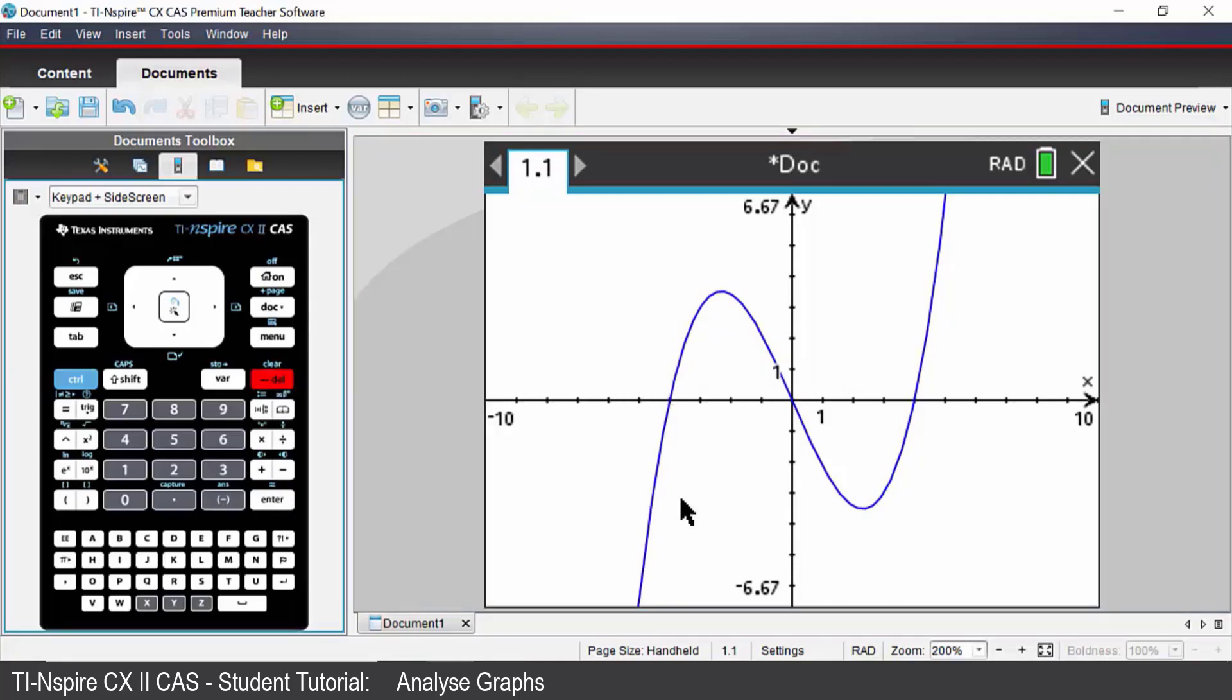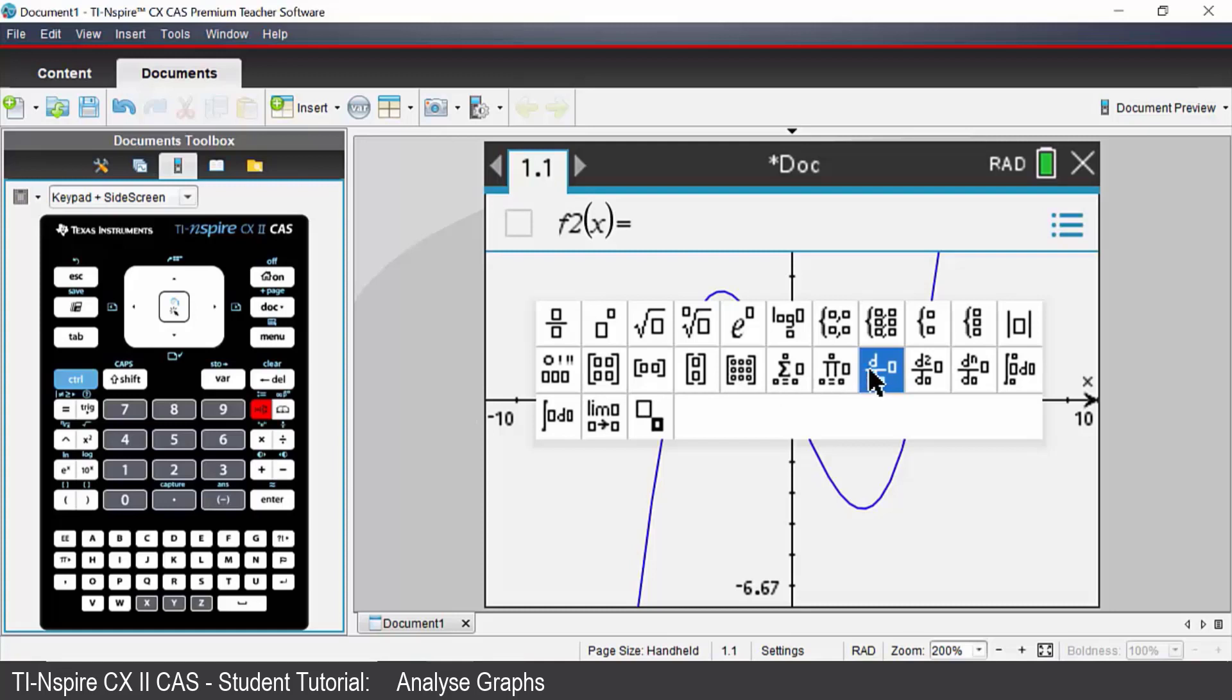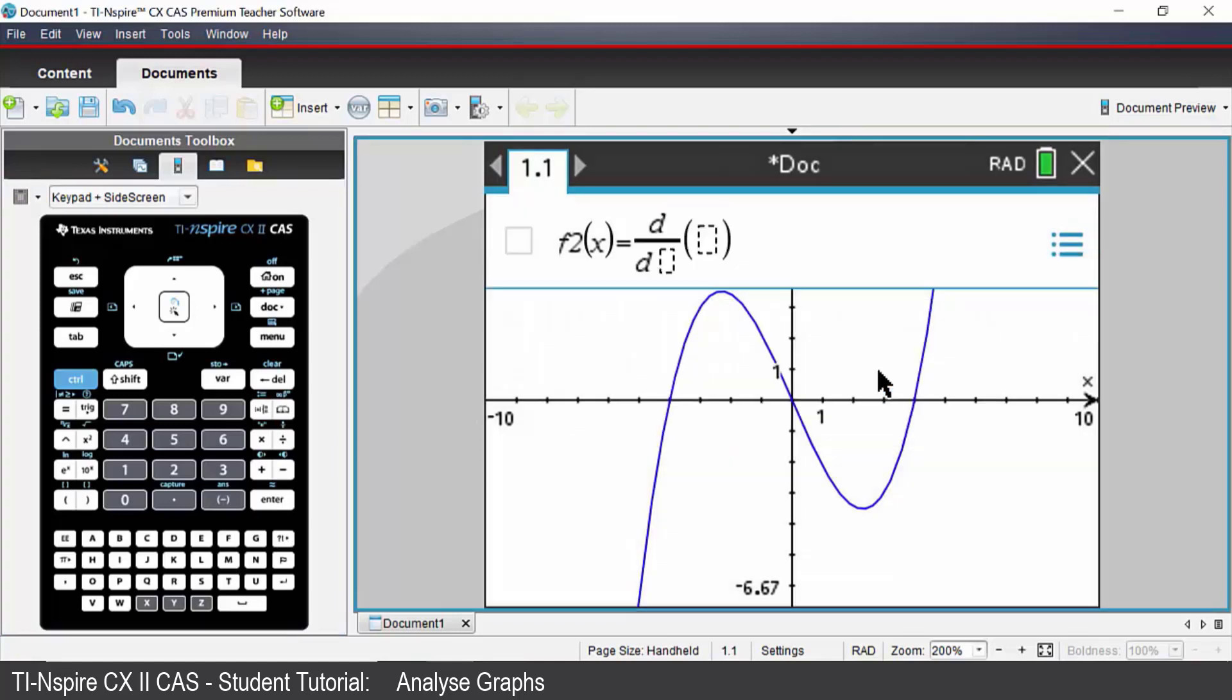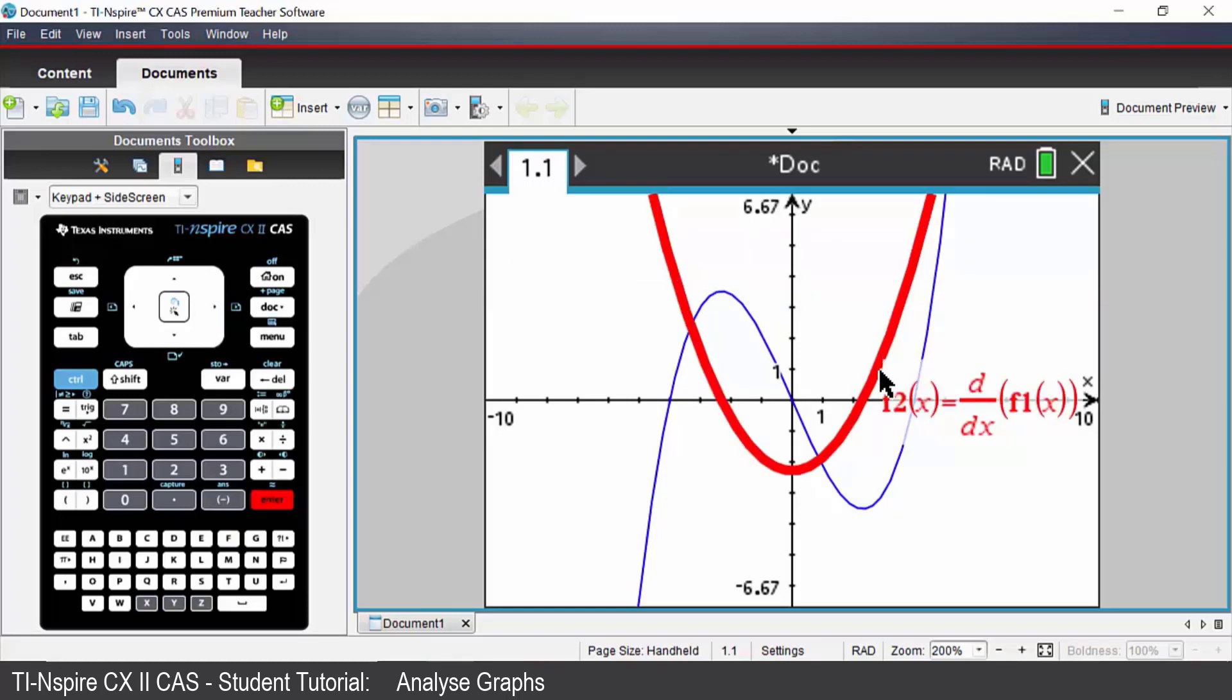The next thing I will do is plot the gradient function for this cubic. To do that, press tab. We're going to do the derivative of our original function, and to do that open the math template which is just next to number 9 on your keyboard, and choose the derivative template there. Click on it or press enter. We're going to do the derivative with respect to x of our original function which is f1, and our variable is x. Press enter and it will plot your gradient function for you.